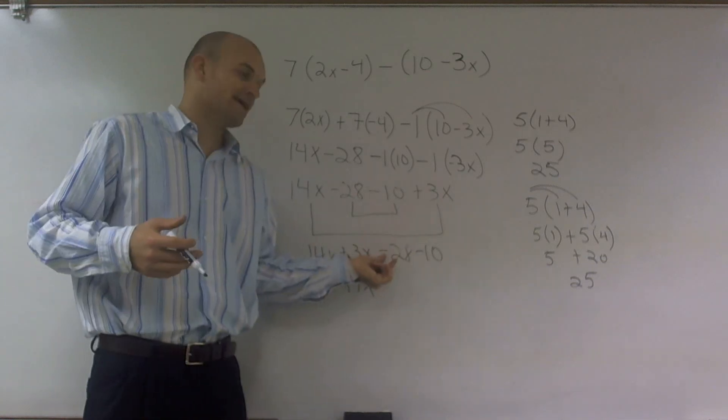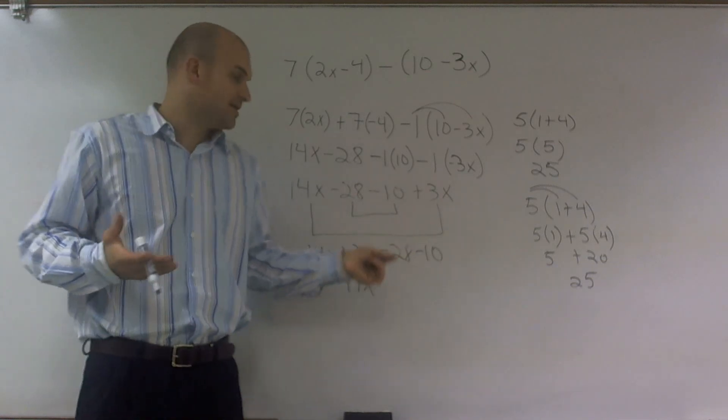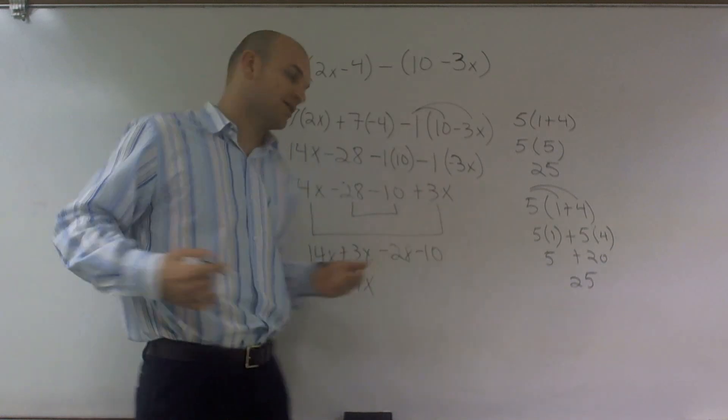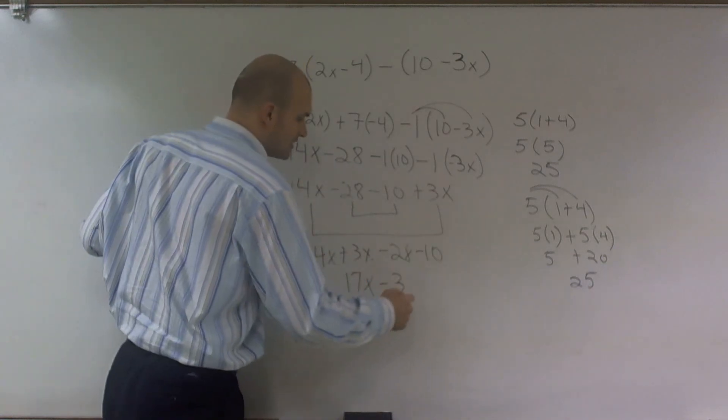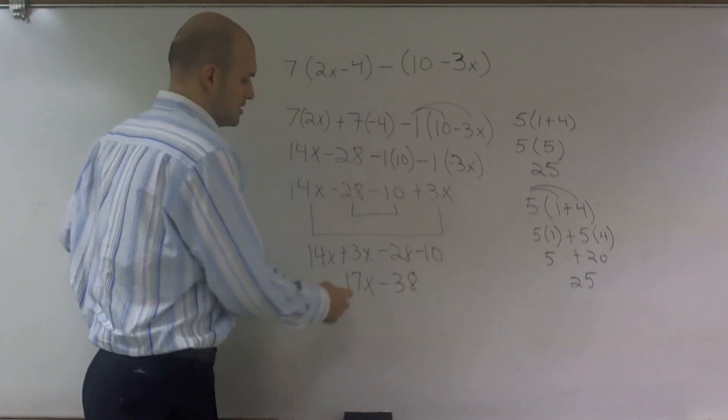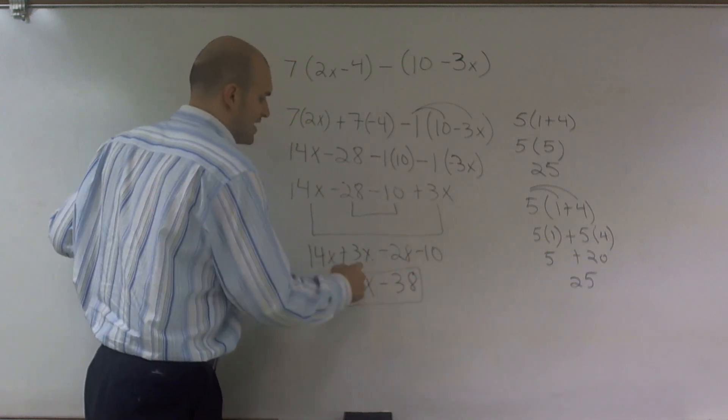If you owe me $28, that's negative 28. And then you're going to subtract or borrow 10 more dollars—you now owe me $38. So that is your final simplified version: 17x - 38.